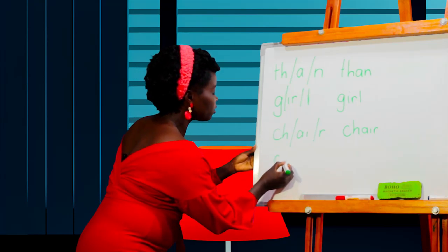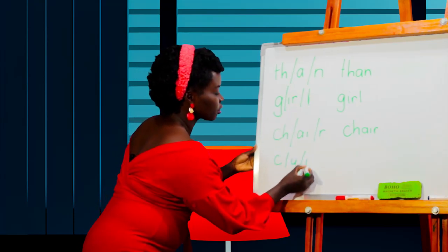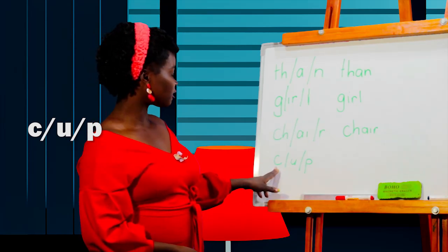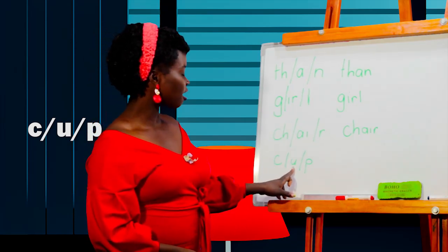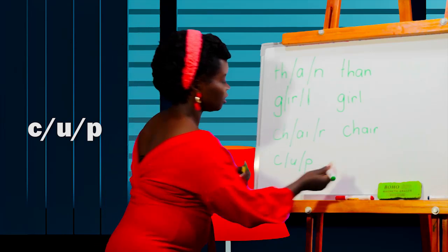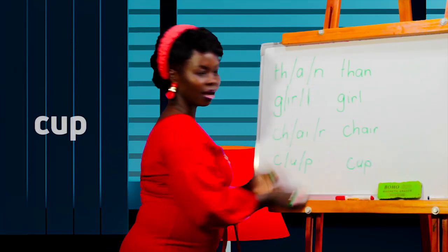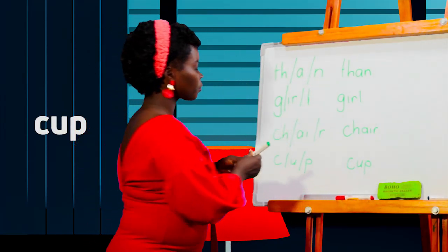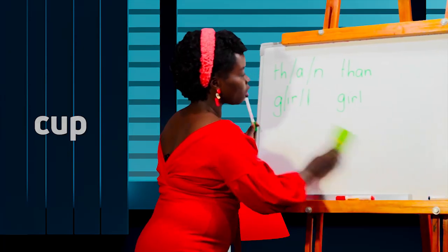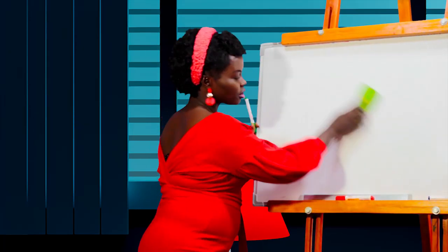What could this one be? There you go — this is a single sound. The word is cup. So we write it here. The word cup is a bit easier that way. Let's segment more words.